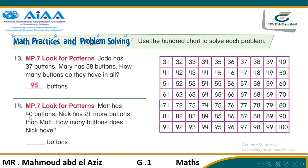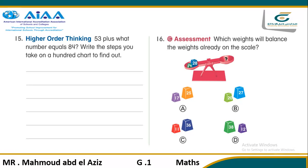Matt has 40 buttons. Nick has 21 more buttons. How many buttons does Nick have? So we add 40 plus 21. Start from 40 on the 100 chart. The tens digit is 2, so go down 2 steps: 1 and 2, reaching 60. The ones digit is 1, so go ahead one step. 60 and 1 equals 61.